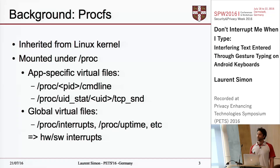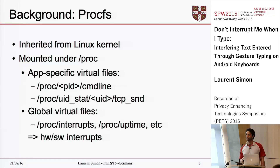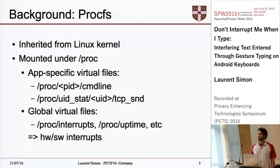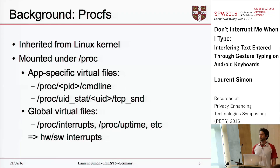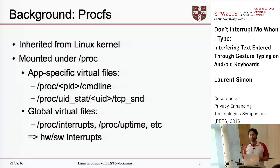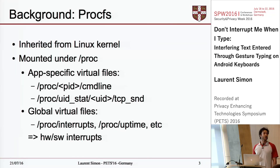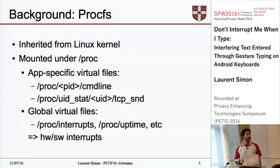Those application-specific virtual files have been shown repeatedly to enable substantial side channels. In the latest Android version, those files have been locked down and are no longer readable by third-party apps. However, under procfs we also find global virtual files that contain information about the global state of the system, and those global virtual files are still accessible even in the latest Android version — these are the files we exploit in this work.